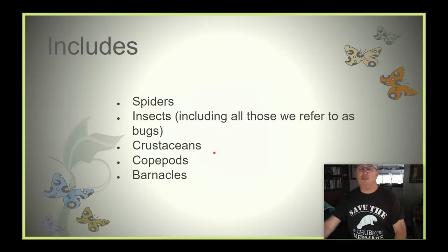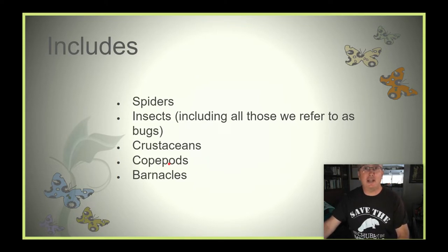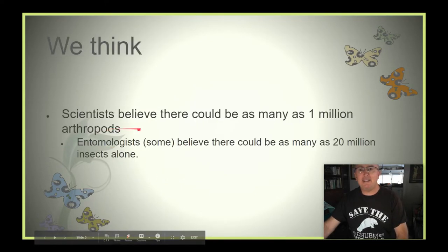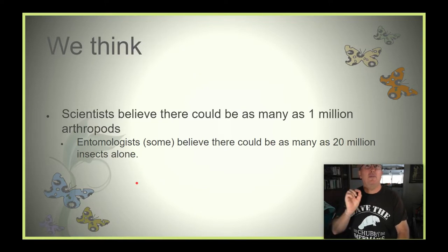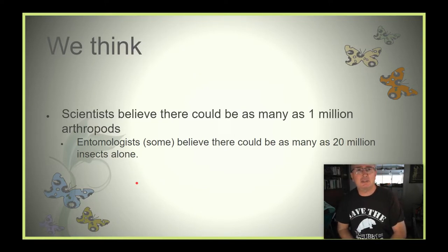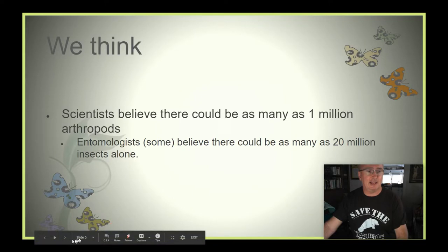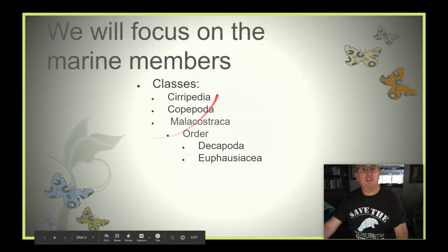crustaceans — crabs, lobster, shrimp, copepods which we've looked at under the microscope in class, and barnacles. Scientists believe there could be as many as over one million different species of arthropods. Some scientists believe that number could be as high as 20 million just for insects alone. We really don't know how many different species of arthropods there are out there, but we know there are a lot.